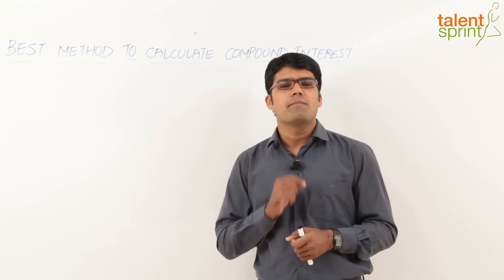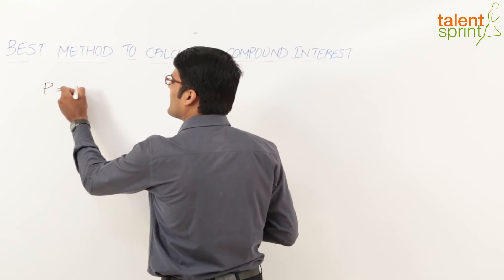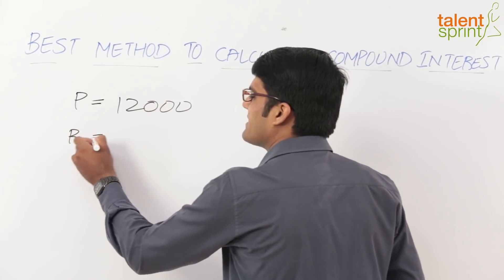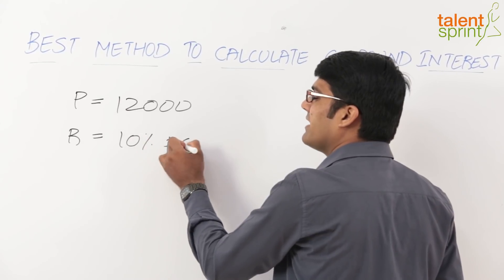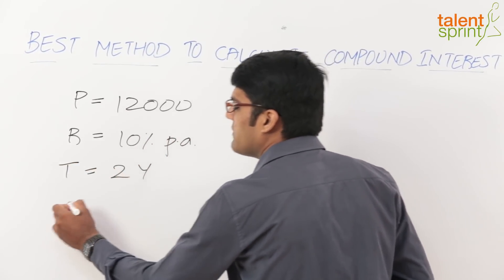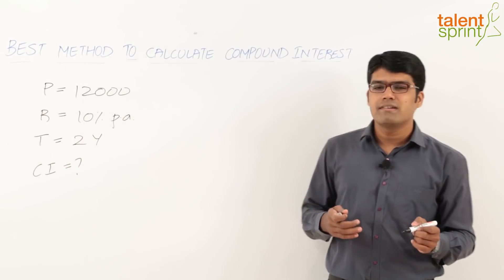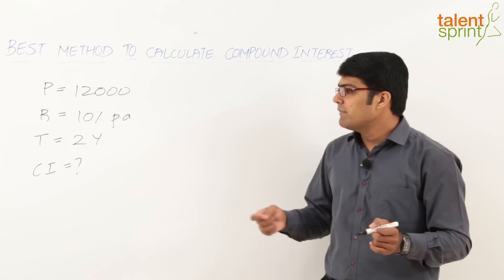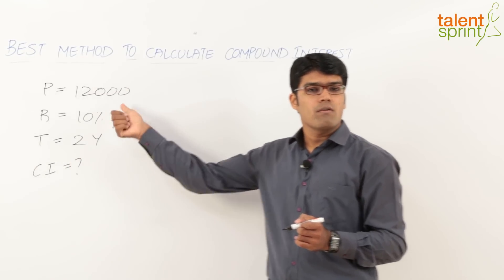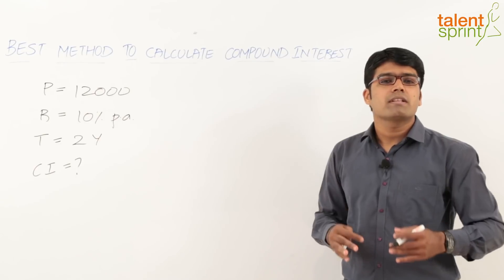Let's understand how we do this with the help of an example. The principal amount given is 12,000, the rate of interest is 10% per annum, and the time period is 2 years. We are required to find the compound interest. So the principal, rate of interest, and time period are given.